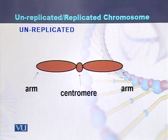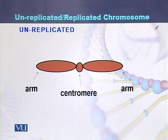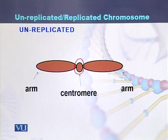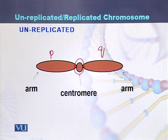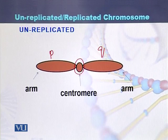In this diagram we can see a pictorial view of an unreplicated chromosome. In the middle there is a centromere, and there are two arms — one arm is P and the other arm is Q. This is an example of an unreplicated chromosome.